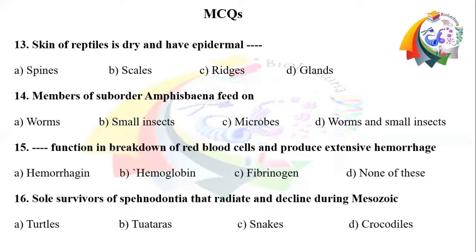Question number 16: Soul survivors of Sphenodontia that radiated and declined during the Mesozoic era. Option A: turtles. Option B: tuataras. Option C: snakes. Option D: crocodiles.